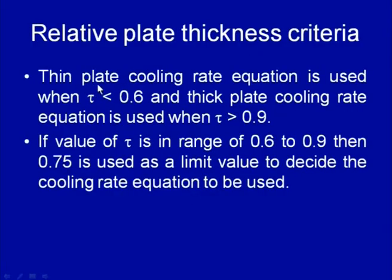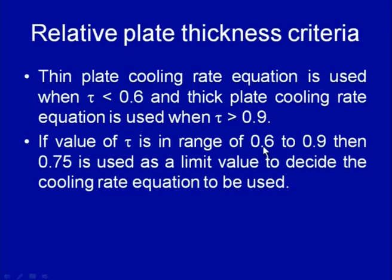According to the relative plate thickness criteria, the thin plate cooling rate equation is used when the relative plate thickness is less than 0.6, and the thick plate equation is used when the relative plate thickness is greater than 0.9. If the value falls in the range of 0.6 to 0.9, then 0.75 is used as the limiting value — if the relative plate thickness is more than 0.75, use the thick plate equation; otherwise, use the thin plate equation.